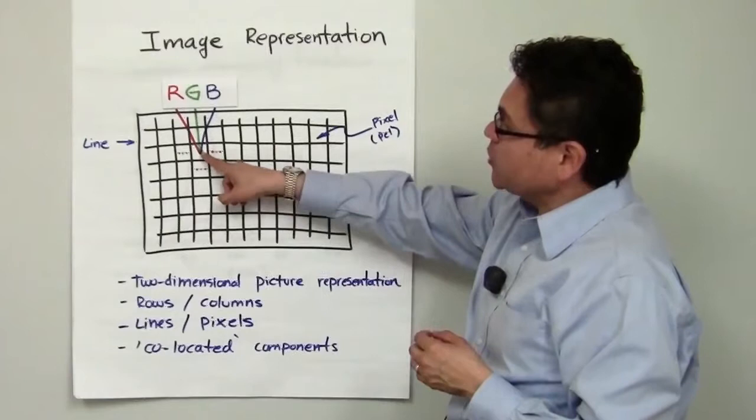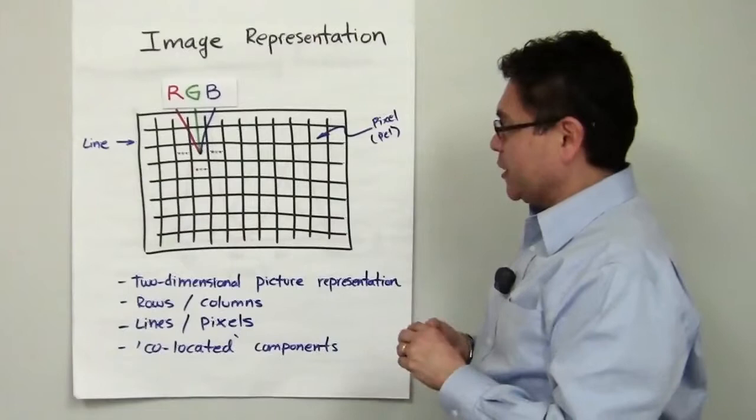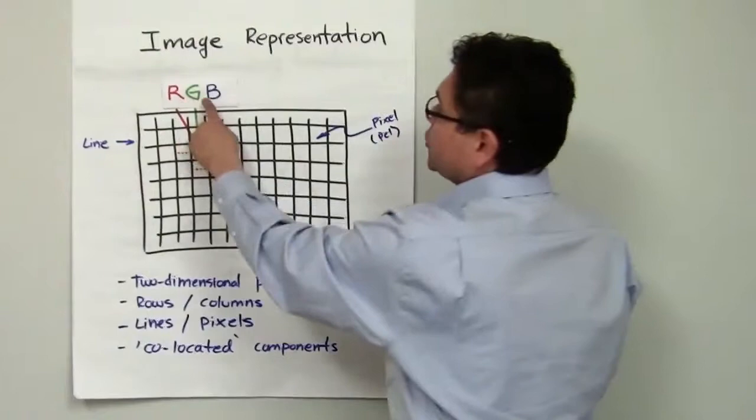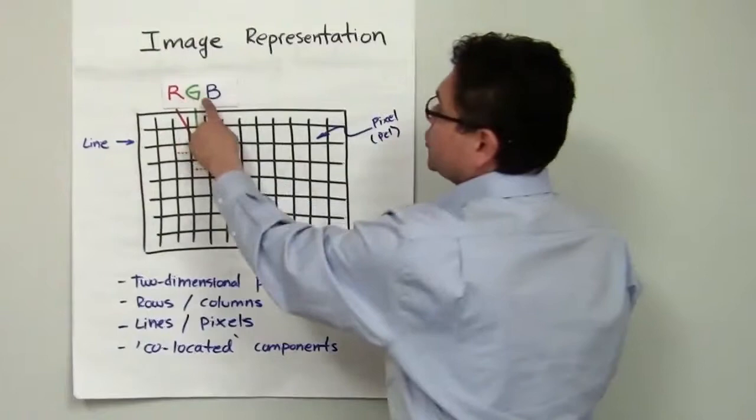In this example, each pixel is represented by an RGB triplet that follows the color primaries that we talked about previously. These pixels are what are called co-located, meaning that the R, G, and B components correspond to one physical location of the picture itself.